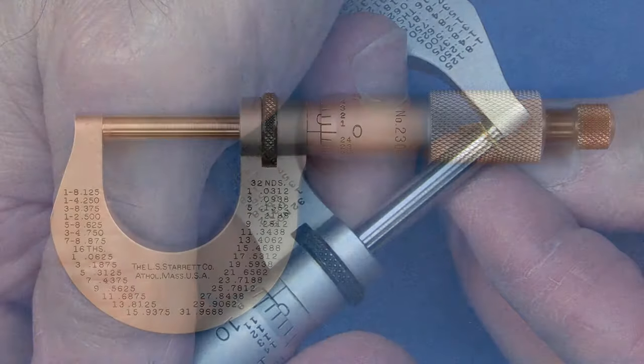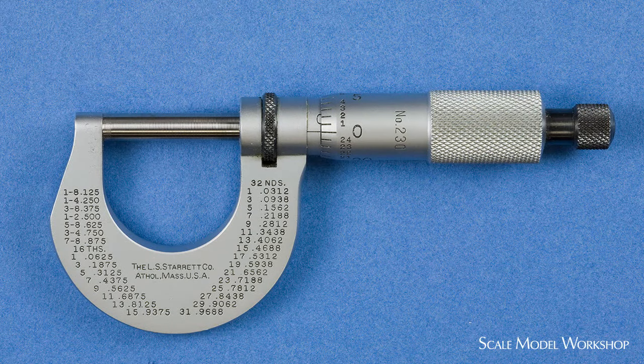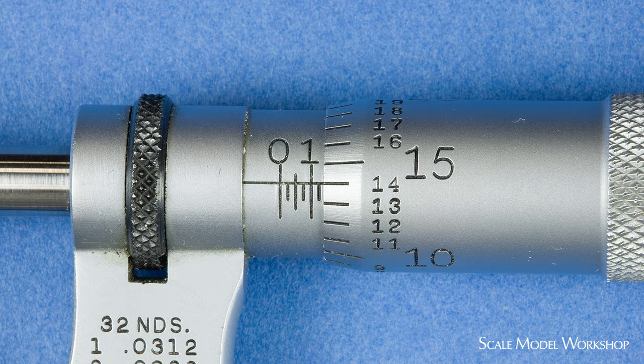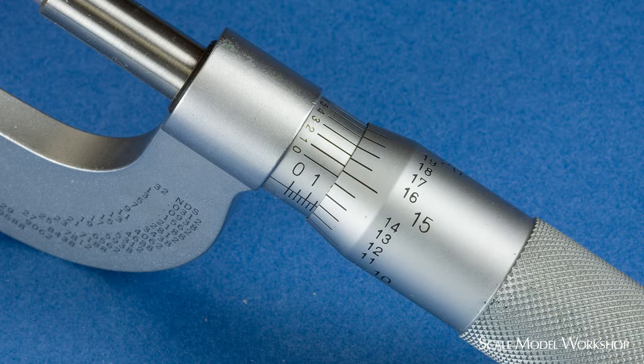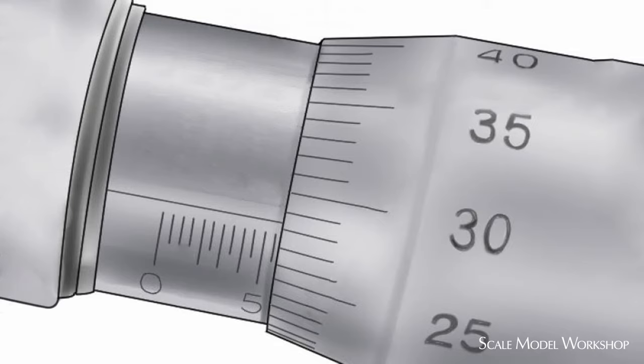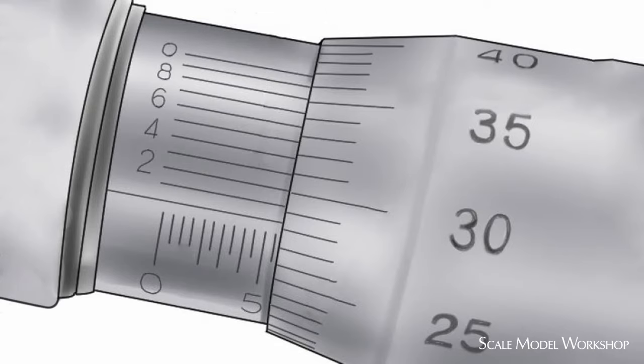Micrometers are manufactured with several scales that can return different degrees of precision. In imperial units, it's either thousandths or ten-thousandths of an inch. In metric units, it's either hundredths or thousandths of a millimeter.